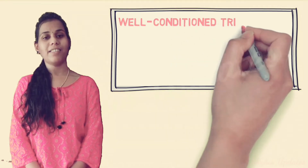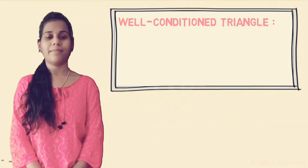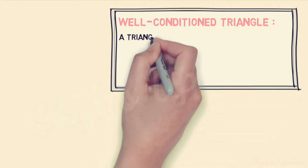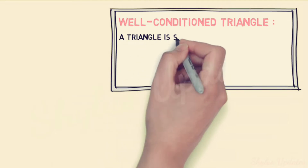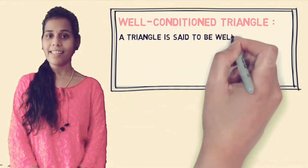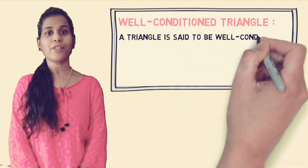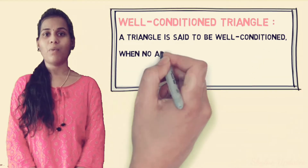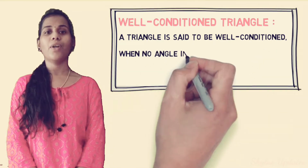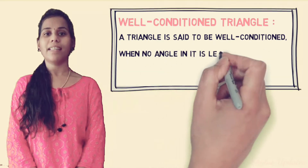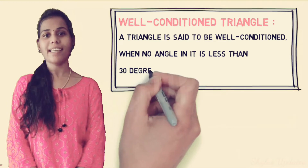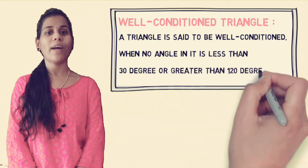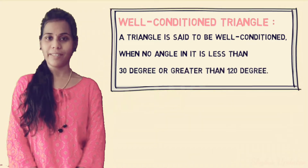Well-Conditioned Triangle: A triangle is said to be Well-Conditioned when no angle in it is less than 30 degrees or greater than 120 degrees.